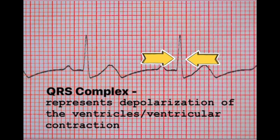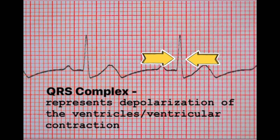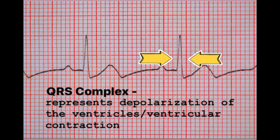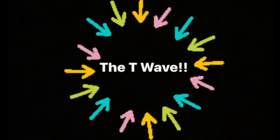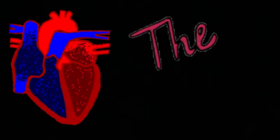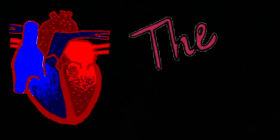The QRS represents the depolarization of the ventricles, or a ventricular contraction. In comparison to the P wave, the QRS is really big because the ventricles are actually bigger than the atrium. When you see that big wave, that represents the big part of the heart contracting. This means that we have a normal sinus rhythm. But before we finish, there's one important thing that can tell us a lot about the heart — the T wave. The T wave comes after the QRS and represents the repolarization, or relaxation, of the ventricles. There you have it — normal sinus rhythm. Thank you for tuning in for Tacky Tuesday!